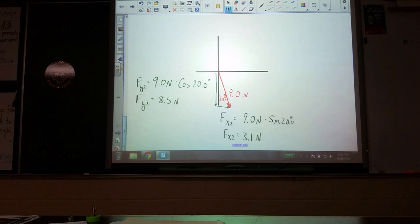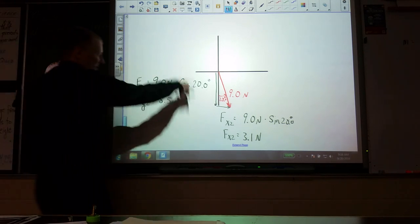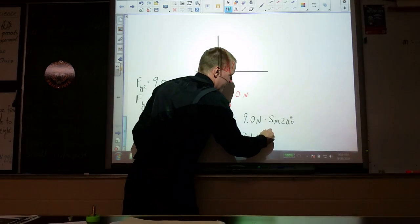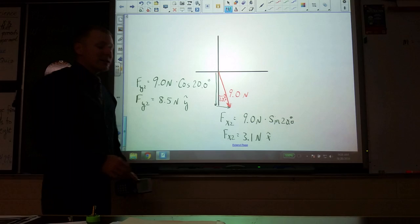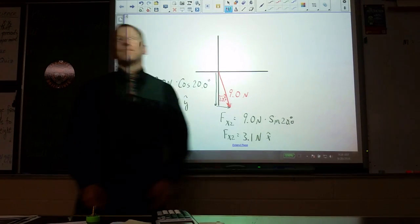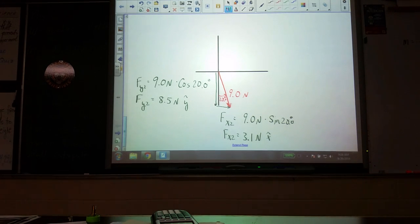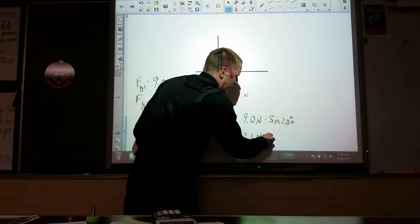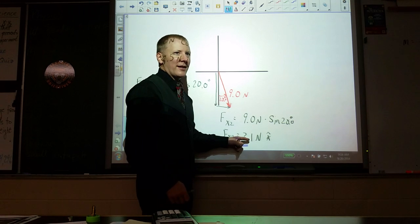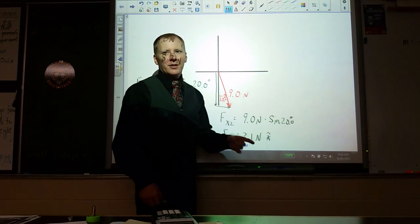This would be y-hat and this would be x-hat to indicate direction. These are called unit vectors that indicate the direction, but their magnitude is 1, so they're not changing this value - they're just saying what direction it's pointing.